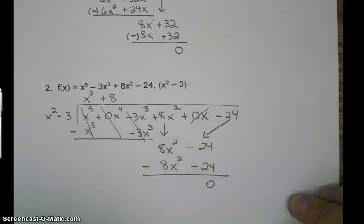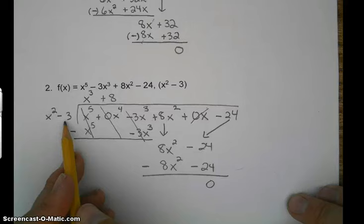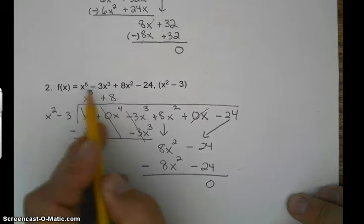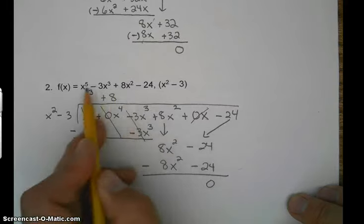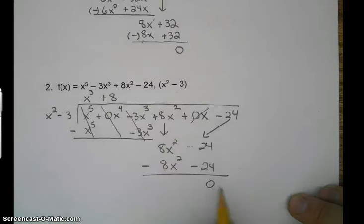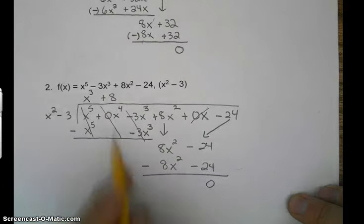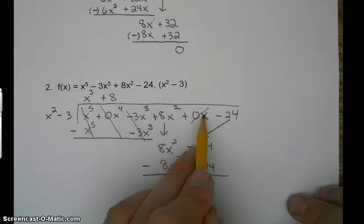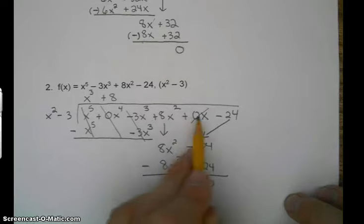So we just found out that x squared minus 3 is a factor of this polynomial, because our remainder is 0. So in this case, we didn't need these, but sometimes we do. Sometimes we do.